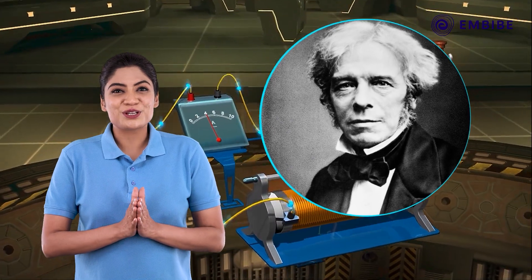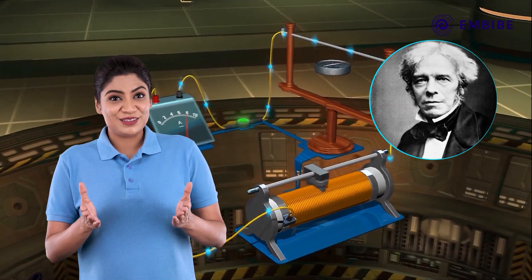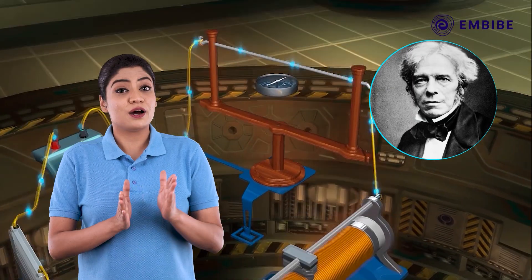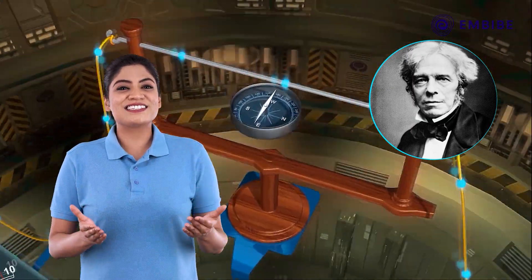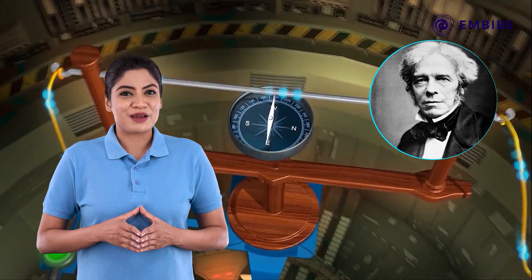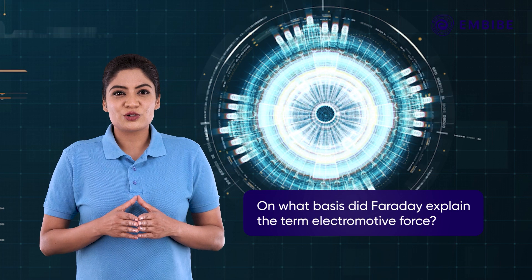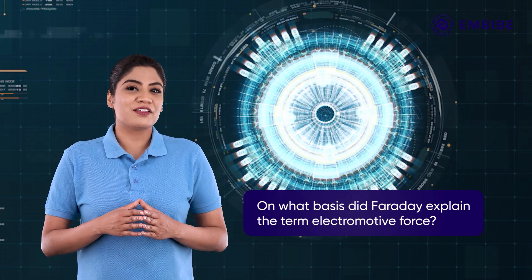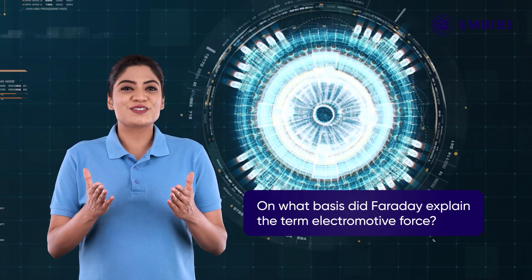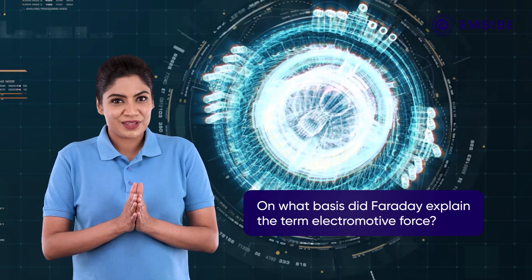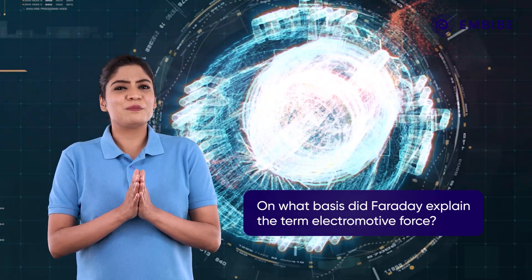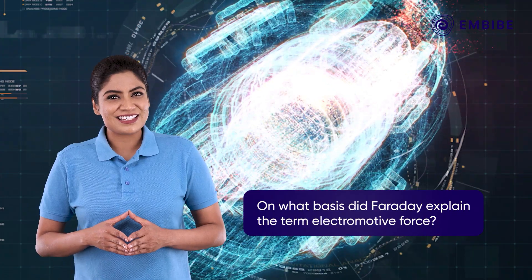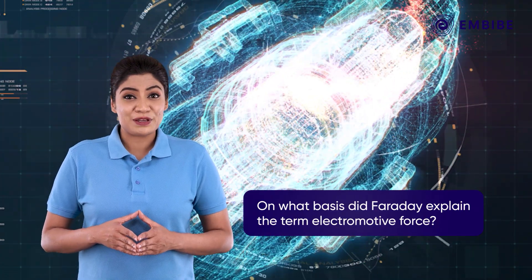Faraday was a curious physicist. It is said that he had tried more than a thousand different ways to come to a conclusion using the same experimental setup. While in the trial process, his observation led to a new path of physics called electromagnetism. Try finding out on what basis he explained this. We will discuss this in our upcoming videos.